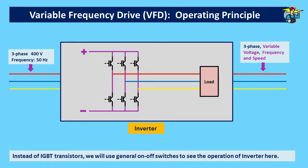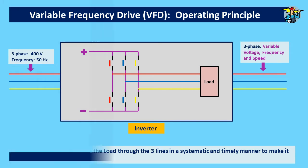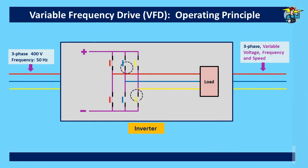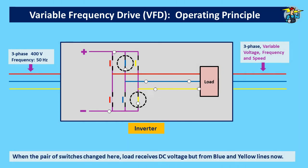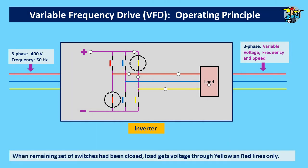Instead of IGBT transistors, we will use general on-off switches to see the operation of the inverter here. DC voltage is supplied to the load through three lines in a systematic and timely manner to make it three-phase again. When the pair of switches circled had been closed, the load receives DC voltage through the red and blue lines. When the pair of switches is changed, the load receives DC voltage from the blue and yellow lines. When the remaining set of switches is closed, the load gets voltage through the yellow and red lines only.